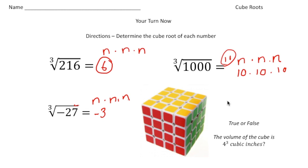Last but not least, it says true or false. The volume of the cube is 4 to the third power of cubic inches. And the answer is true because the length of the shape is 4, there's 1, 2, 3, 4 squares. The width is also 4, you can see the 4 green, 2, 3, and 4. And then the height is also 4 going up, it's 1, 2, 3, 4. So if I did 4 times 4 times 4, that would give me the volume of that cube. How'd you do?